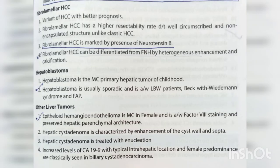Fibrolamellar HCC is a variant of HCC with better prognosis and higher resectability rate due to its well-circumscribed, non-encapsulated structure. It is marked by the presence of neurotensin. Fibrolamellar HCC can be differentiated from FNH by heterogeneous enhancement and calcification. Hepatoblastoma is the most common primary hepatic tumor of childhood; it is usually sporadic and associated with low birth weight, Beckwith-Wiedemann syndrome, and FAP. Epithelioid hemangioendothelioma is most common in females and is associated with factor VIII staining and preserved hepatic parenchymal architecture.